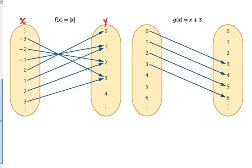Now, our y values have two arrows pointing at them, except for 0. So what that means is the absolute value of x is a function, but its inverse is not a function.